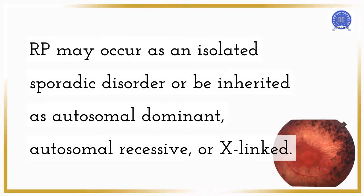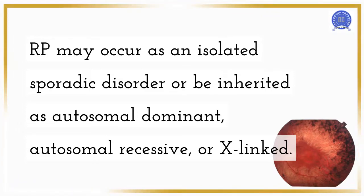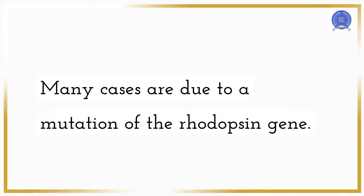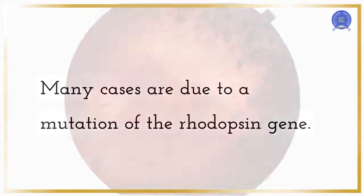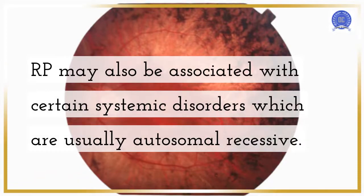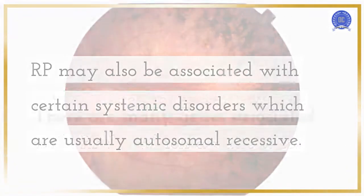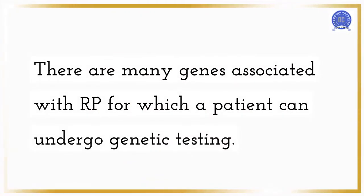RP may occur as an isolated sporadic disorder or be inherited as autosomal dominant, autosomal recessive, or X-linked. Many cases are due to a mutation of the rhodopsin gene. RP may also be associated with certain systemic disorders which are usually autosomal recessive. There are many genes associated with RP for which a patient can undergo genetic testing.